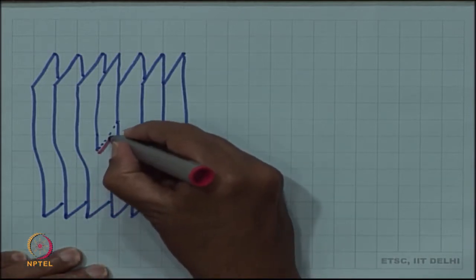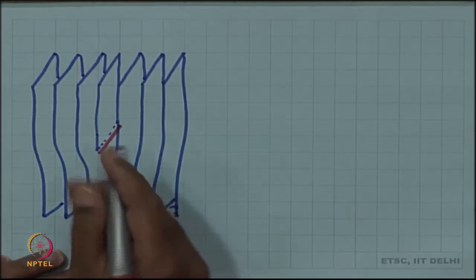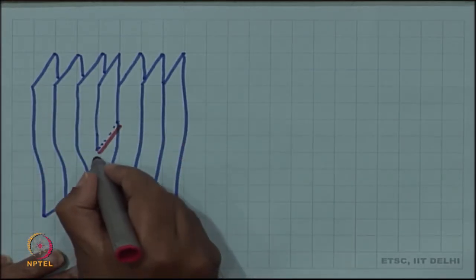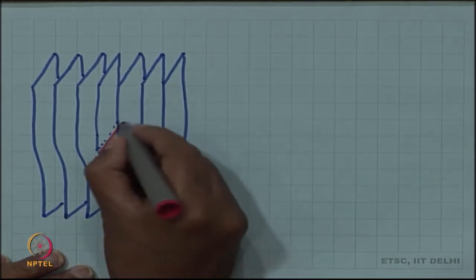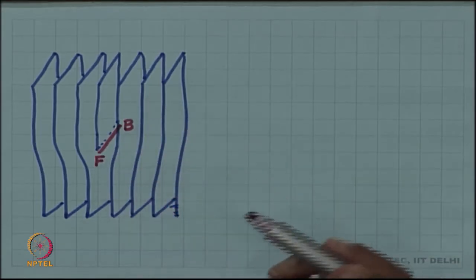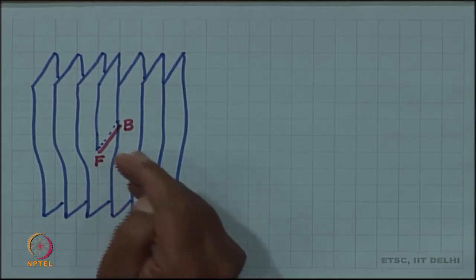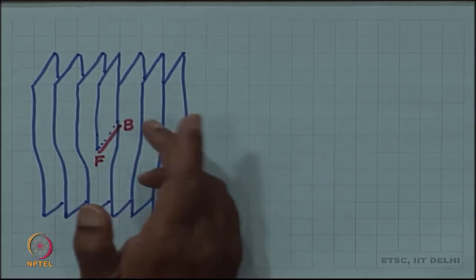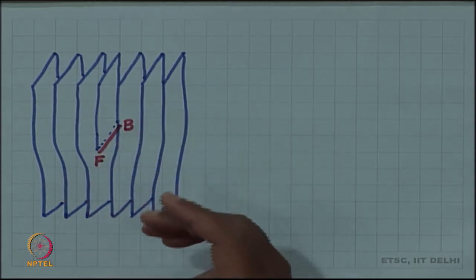The bottom edge of this half plane is the dislocation line. The dislocation line exists here, and the way I have drawn this, it is the front face of the crystal. So the dislocation starts from the front face and reaches the back face — it is a dislocation line running right from the front to the back. We can see that this dislocation is not ending inside the crystal; it is running from the front face to the back face.